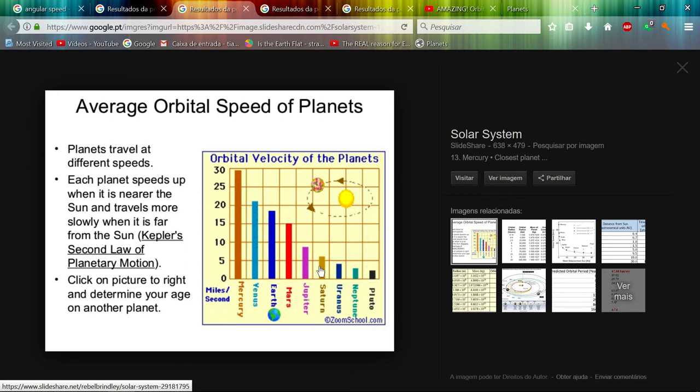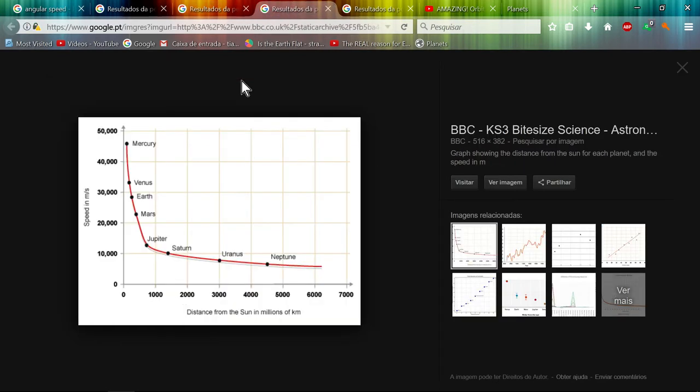This is how it works in reality. Pluto, Neptune, and Uranus are the slowest, as you can see in this graphic. The distance from the Sun, the slower the speed.